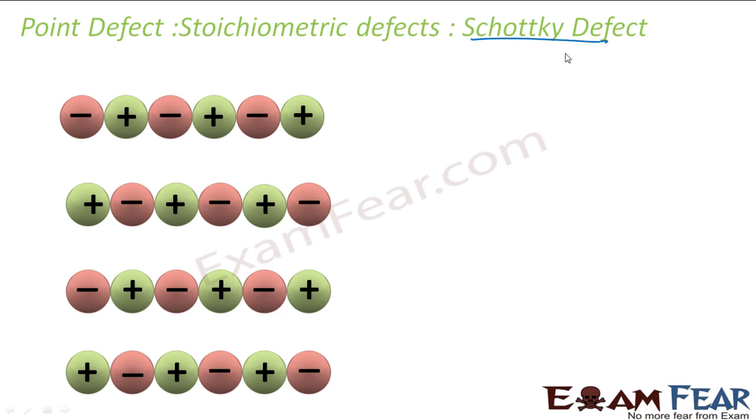The next is Schottky defect. In Schottky defect, something is missing. But in order to maintain the neutrality, what should happen is the number of cations missing should be equal to the number of anions missing. So if you remove only one negative charge, then the whole crystal becomes positively charged. We don't want that. So one positive charge also should go off. One positive, one negative went off. This kind of defect is called Schottky defect. Since one cation-anion pair, or n number of cation-anion pairs are removed from this, density will obviously decrease. Why? Because density is mass by volume. Mass is decreasing, volume is constant for a crystal. Here NaCl is a good example.